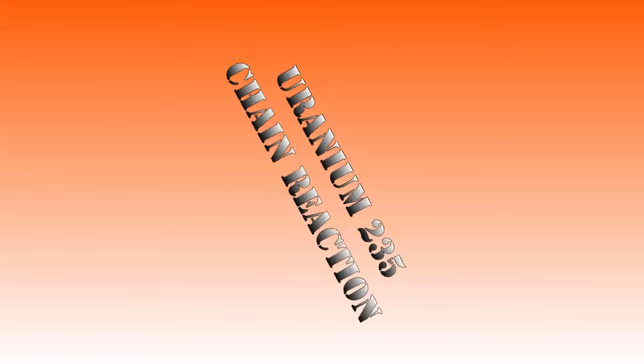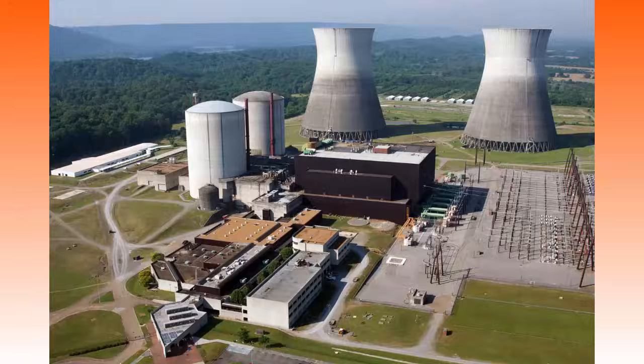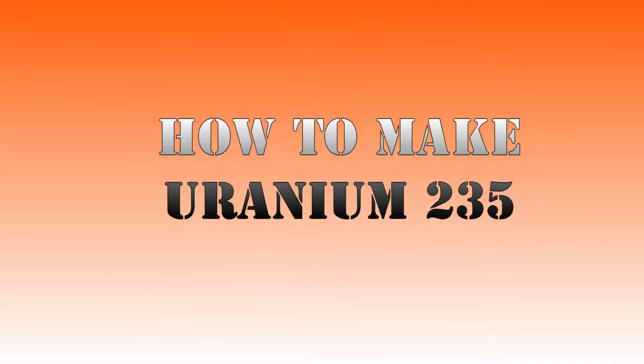Hey viewers! Today we will be taking a look at the uranium-235 chain reaction. This chain reaction is used in nuclear power plants as well as nuclear bombs. If you would like to know how uranium-235 is made, click the screen now or follow the link in the description.